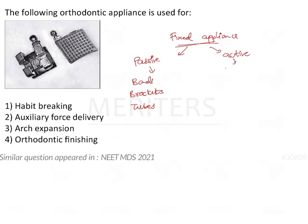Whereas active components are the ones that actually bring about force or tooth movement. They are in the form of arch wires, coil springs, or elastomerics like E-chain.